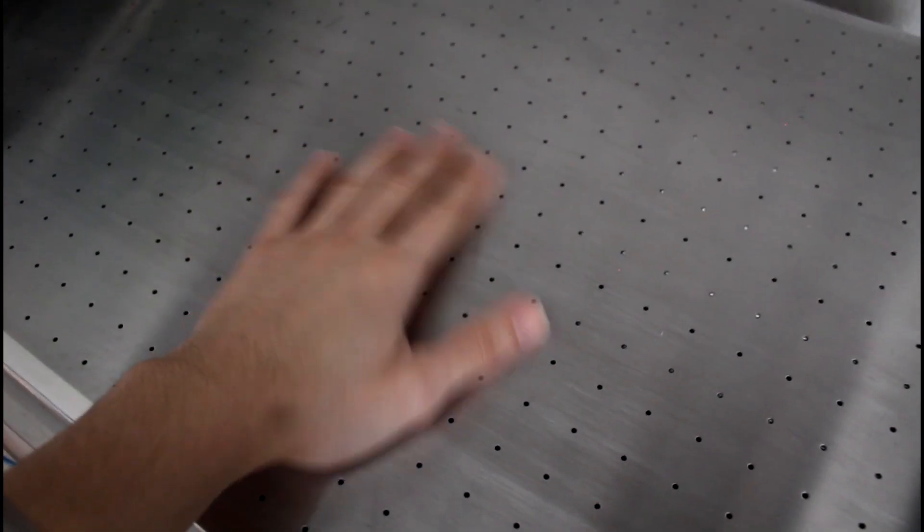And then we have the vacuum former where all the air gets sucked into these holes. This is solid stainless steel as well.